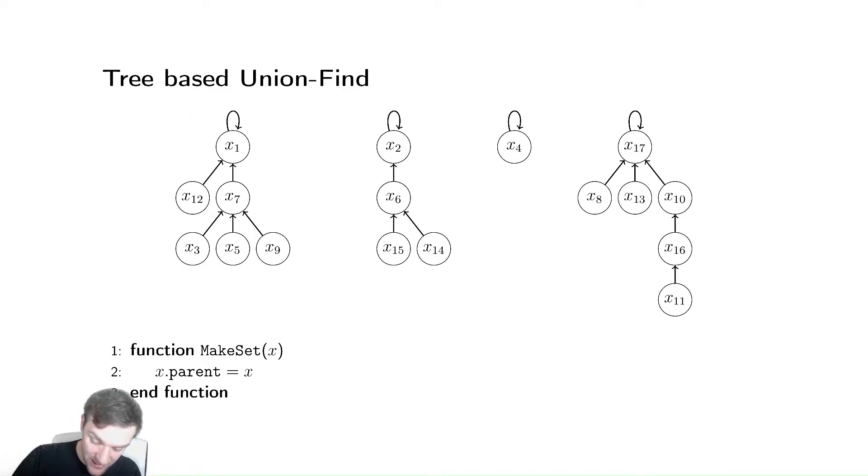So up here, if we started at x5, we would say, okay, its parent is not itself, so we'll go up to x7. Its parent is not itself, so we'll go up to x1. x1's parent is itself, so we return x1. So x1 is the representative element from that first set for x5.